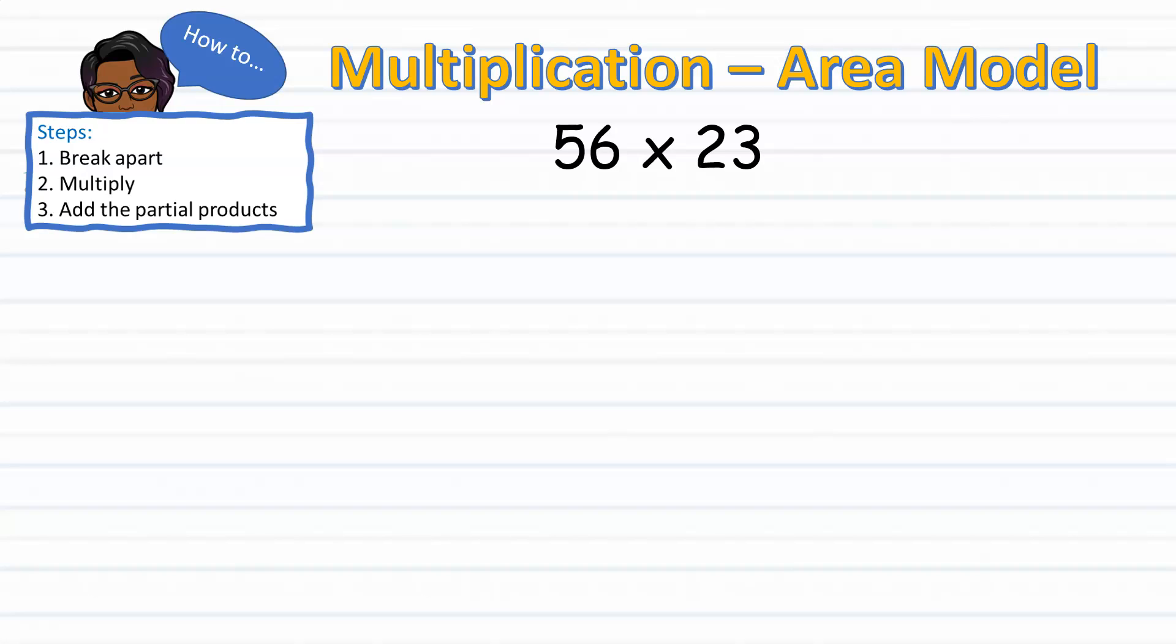Here we have 56 times 23. Following step one, we will break apart the multi-digit factors. I've decided to break up both factors by their place value. Since the five is in the tens place, I wrote 50 and six ones equals 6. Two tens equal 20 and three ones equals 3. Keep in mind that factors can be broken up in many ways, but for easier mental math computation, I find that this method is best.